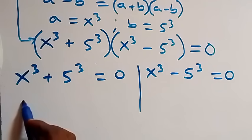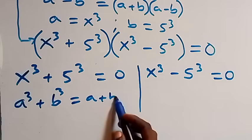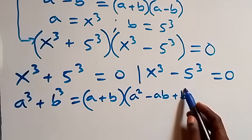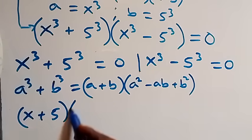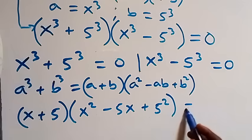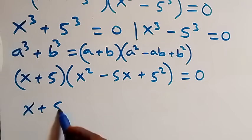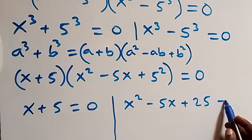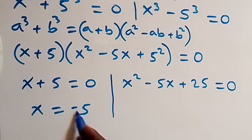Solving from the first case, this follows the sum of cubes identity: a³ + b³ = (a + b)(a² − ab + b²). Applying this, we get (x + 5)(x² − 5x + 25) = 0.